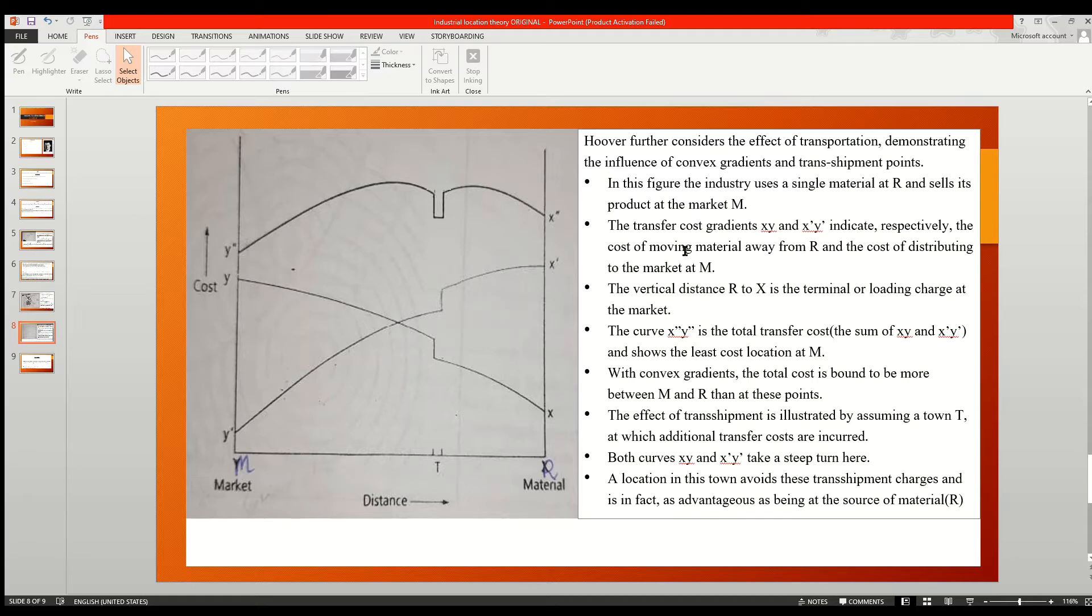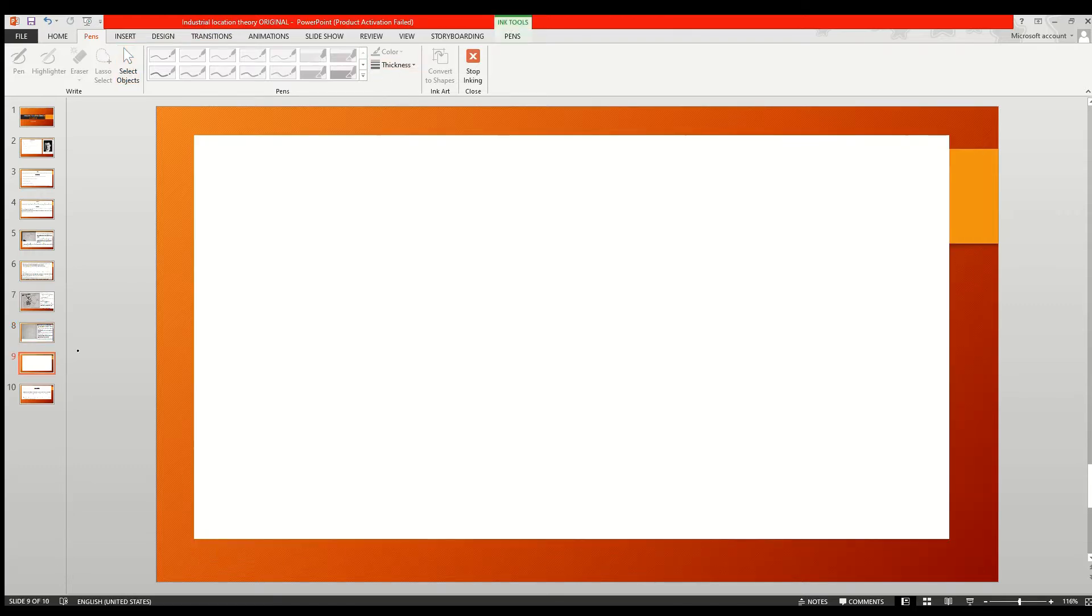Again, Hoover considers if the transport cost increases in an AP series. What do we mean by that? Let's say we know the farther we go, the transport cost will increase. If we consider every distance is one kilometer.